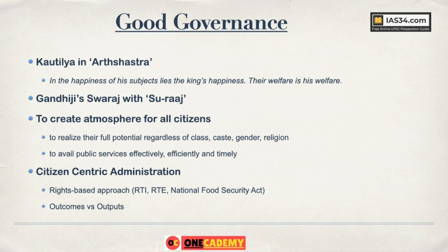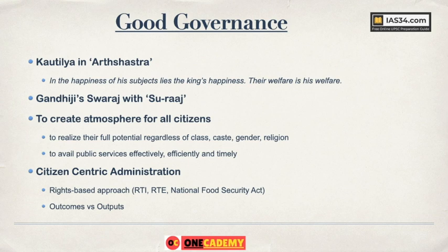Good governance focuses more on outputs and not just outcomes. Outcome refers to numbers and figures — how many Indira Awas Yojana houses were allocated, how much budget was given. Output means what actual real result there is on the ground — whether the beneficiary actually got the house, got the money, got the pension. So earlier it was only outcome-based; now it is output-based, citizen-centric administration. That is what good governance is about.